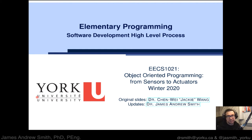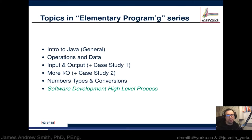This is going to be the sixth video in the elementary programming series for the Java programming class, Object-Oriented Programming from Sensors to Actuators, EECS 1021. This is the last discussion in this series. We're going to talk about software development from a high-level perspective.